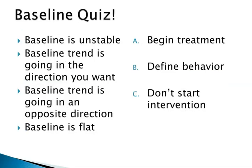So we've got a baseline quiz. What do you do if the baseline is unstable? You should have said B — you need to redefine the behavior. If the baseline trend is going in the direction you want, you don't need to start intervention — things are going well. If the baseline trend is going in the opposite direction, this is a good time to begin treatment because things are going from bad to worse. And if the baseline is flat, again, you can begin treatment.